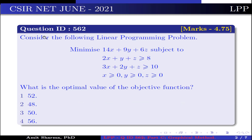The question is: consider the following linear programming problem — minimize 14x plus 9y plus 6z, subjected to the constraints 2x plus y plus z ≥ 8, 3x plus 2y plus z ≥ 10, and x ≥ 0, y ≥ 0, z ≥ 0. What is the optimal value of the objective function?